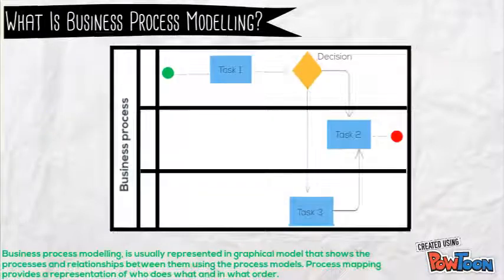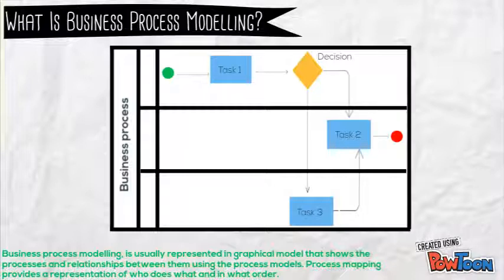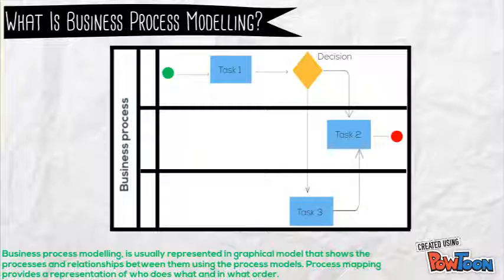Business Process Modeling is usually represented in a graphical model that shows the processes and the relationships between them using process models. Process mapping provides a representation of who does what and in what order.